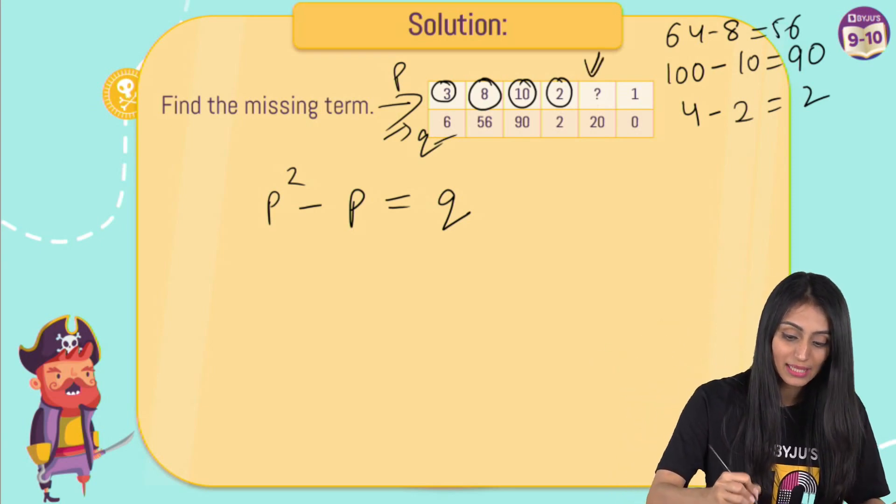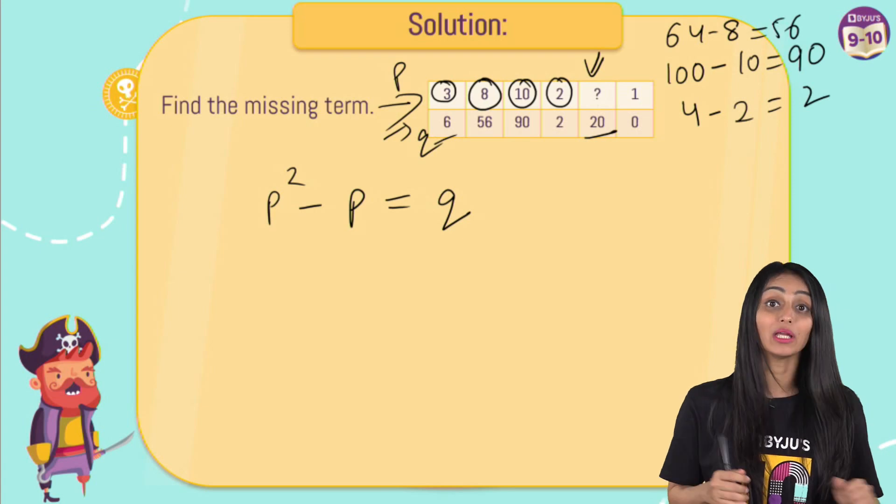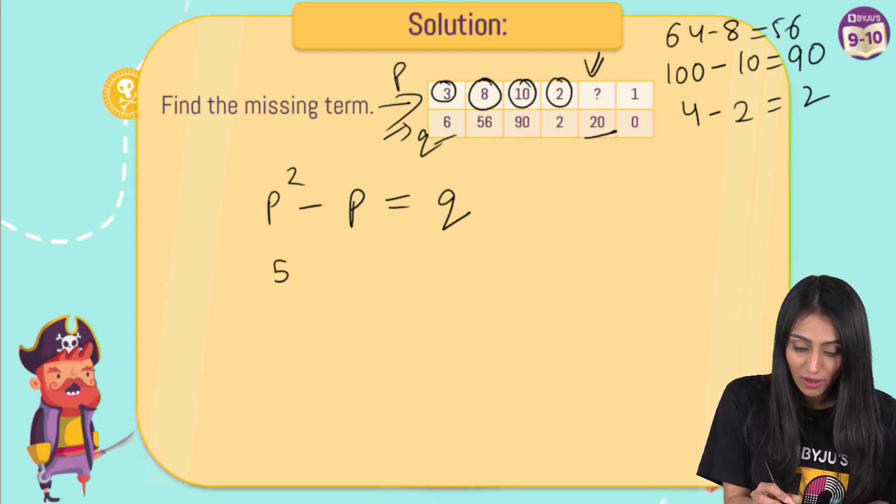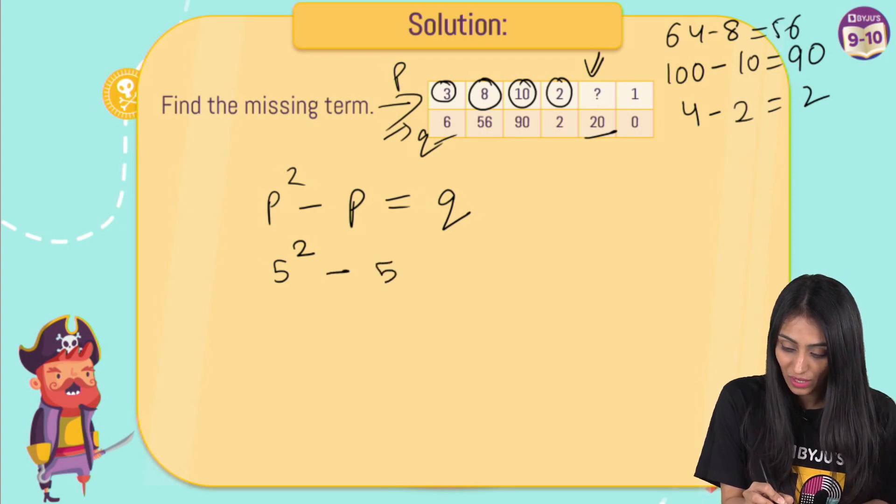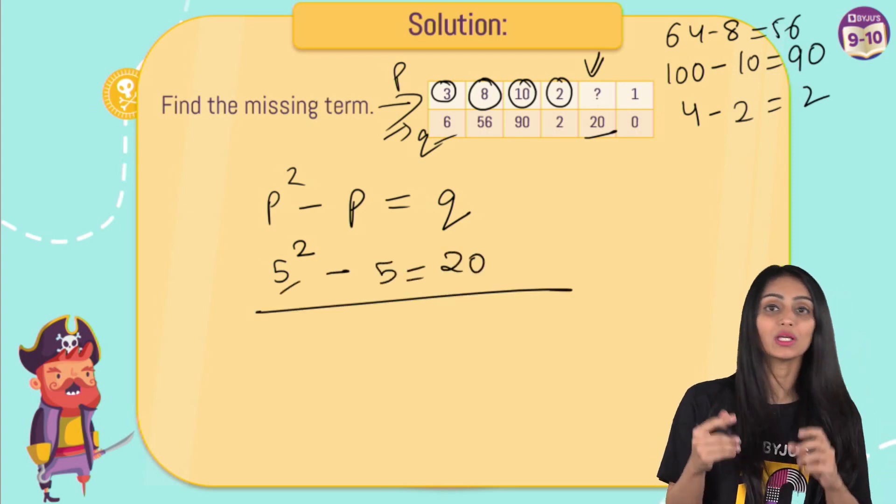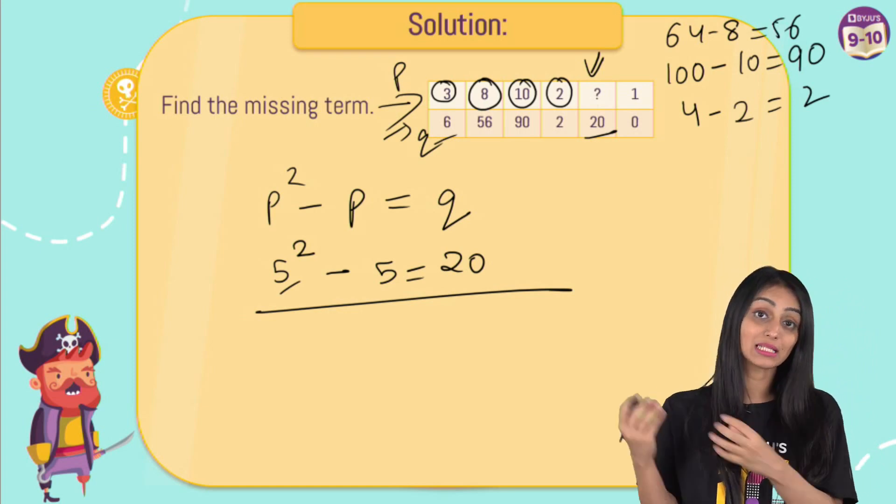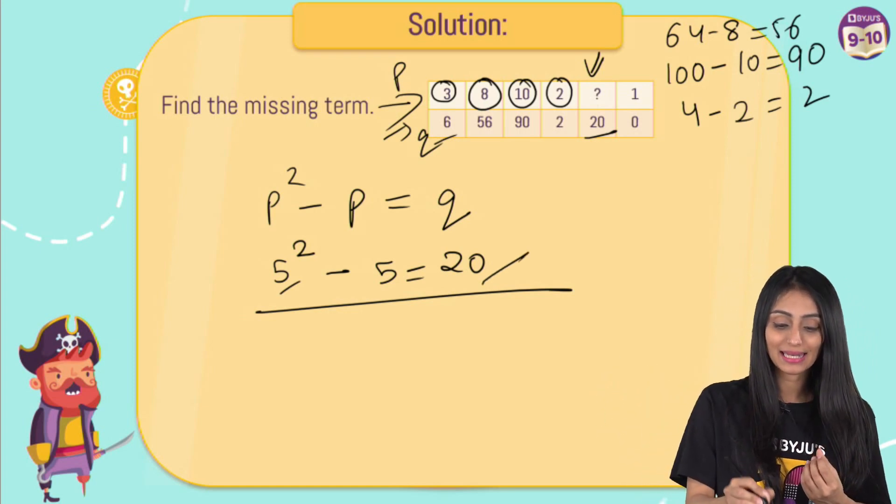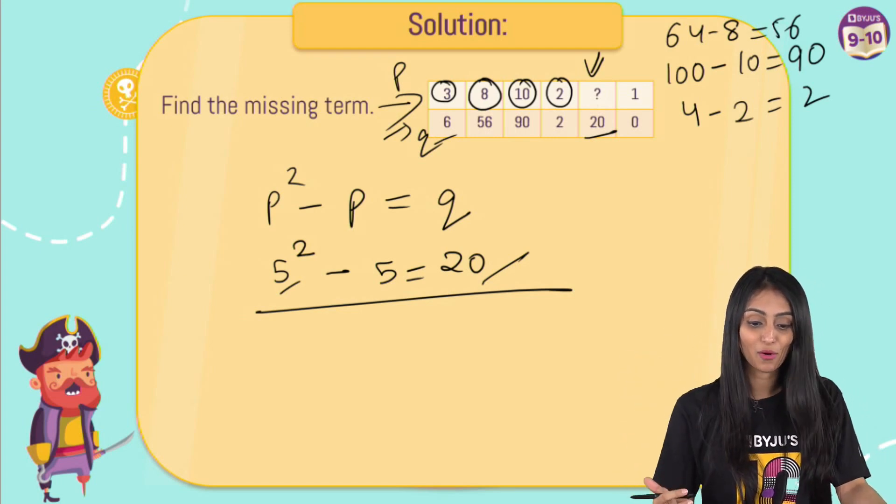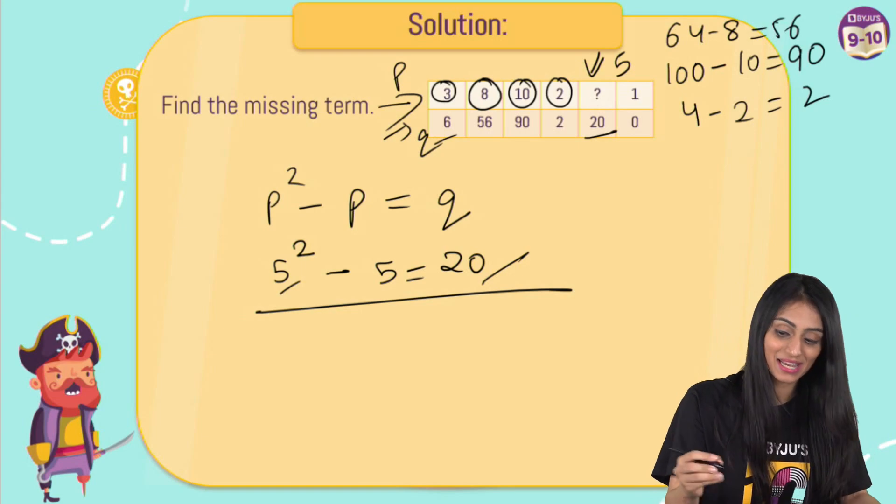Similarly, for this one as well, here I am getting 20. So similarly, this should be 5 square minus 5, that would give me 20. Because every time it has to be a number, once I take the square of it and I subtract the same number from it, then I get this 20 over here. So that's what the trick over here is. So missing number over here is 5 we can say.